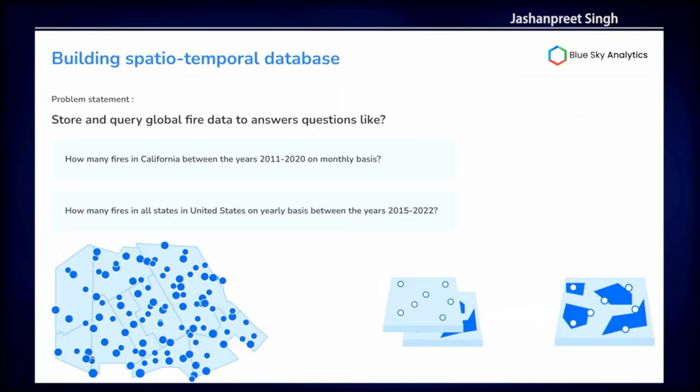What are the questions we're answering from the database? For example, we have a global fire dataset with a one-day frequency — every day we get fires all over the globe from NASA FIRMS data. We want to answer questions like: what were the California fires on a monthly basis over the last decade? Another dataset we have is water quantification, measuring how much lakes are changing all over the world. There are about 400,000 water bodies worldwide, and the data frequency is about 15 days. If you want to see how a particular lake has changed on a monthly or yearly basis over five years, those are the sorts of questions we answer from our database.